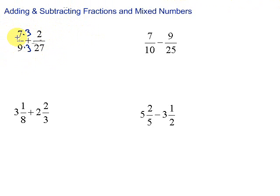Then we'll rewrite this. 7 times 3 is 21. 9 times 3 is 27. Plus 2 over 27. Now, once we have the common denominator, we just go ahead and add right across the top.